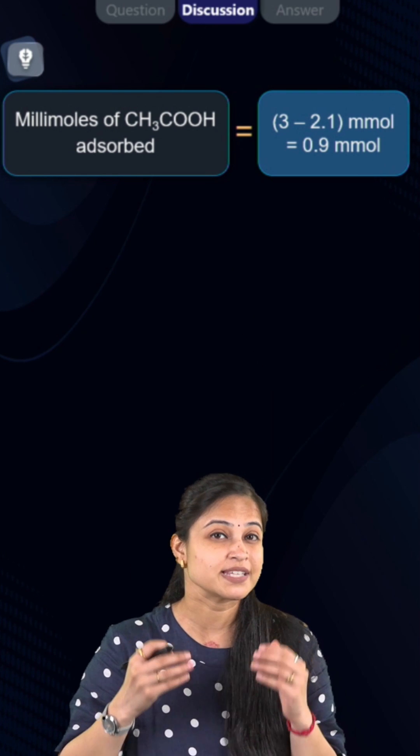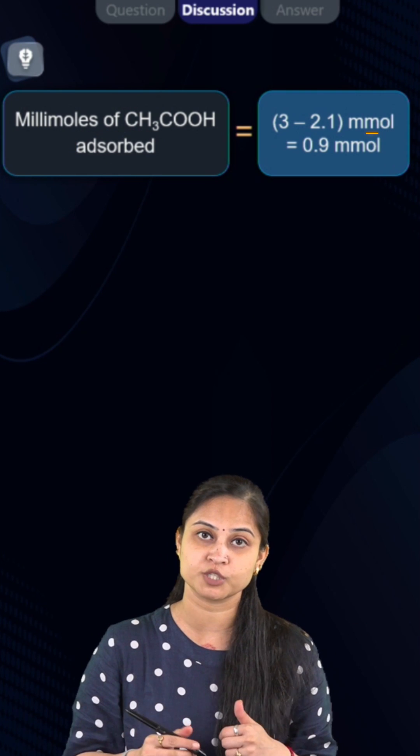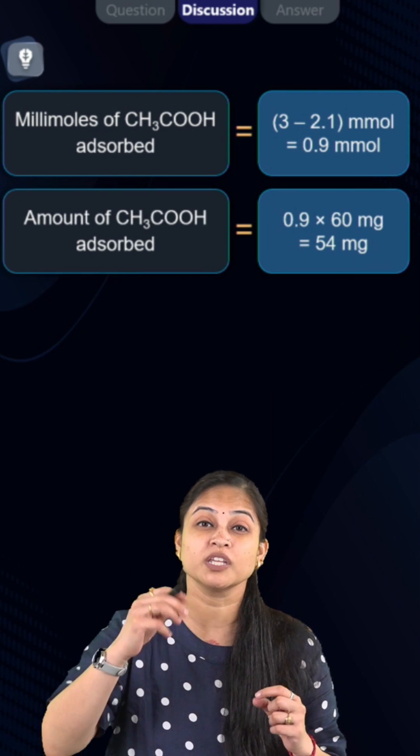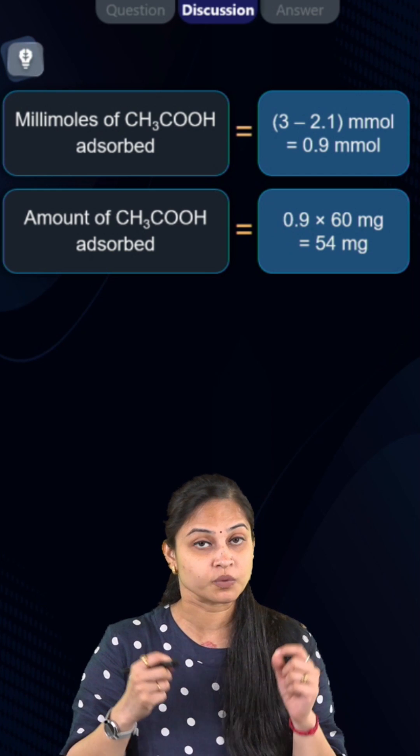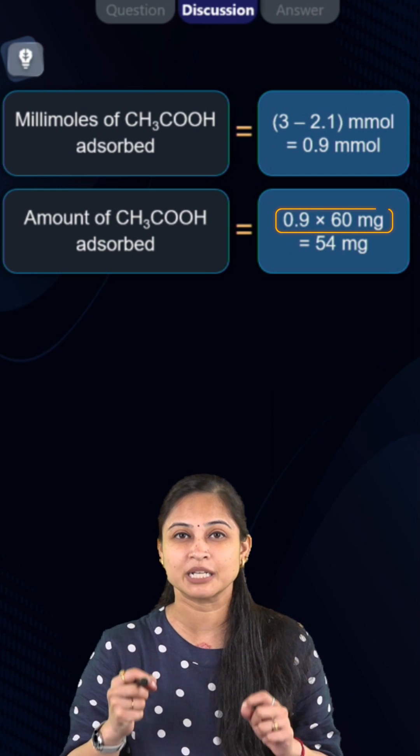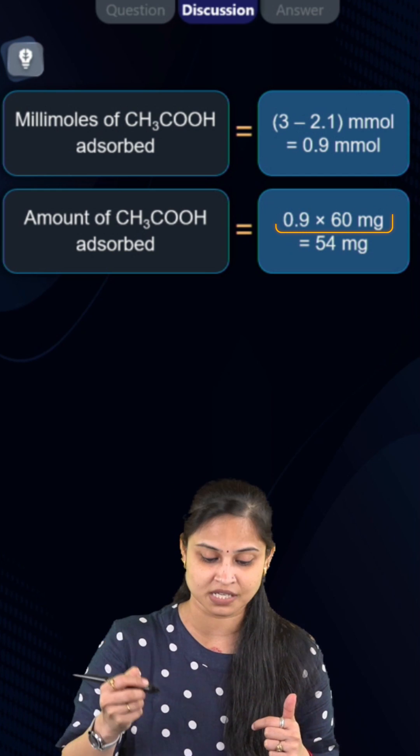Talking about the millimoles of acetic acid adsorbed, which comes out to be 0.9 millimole. The amount of acetic acid adsorbed will be equals to 0.9 multiplied by the molar mass which is equals to 60, so it comes out to be 54 milligrams.